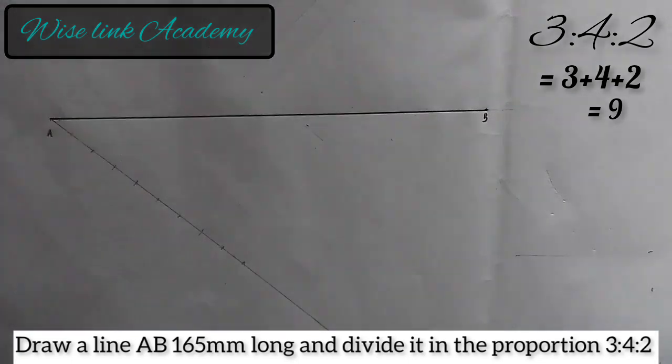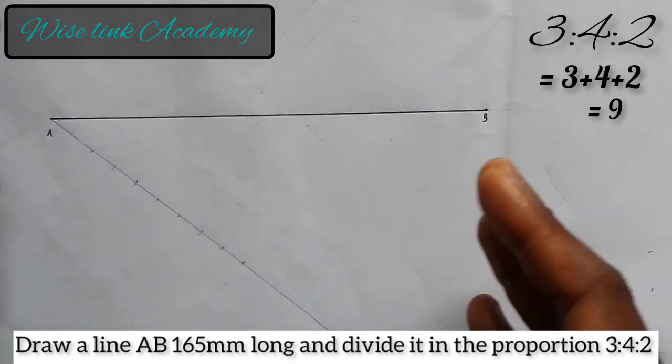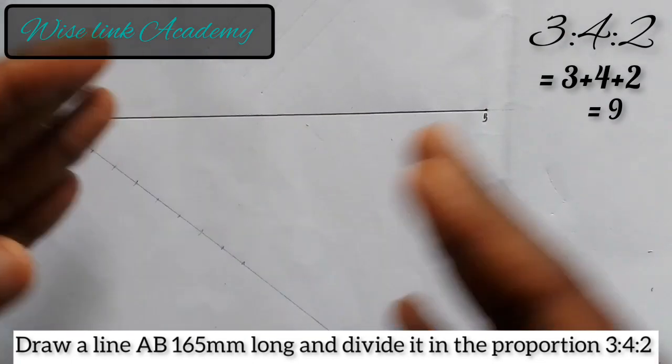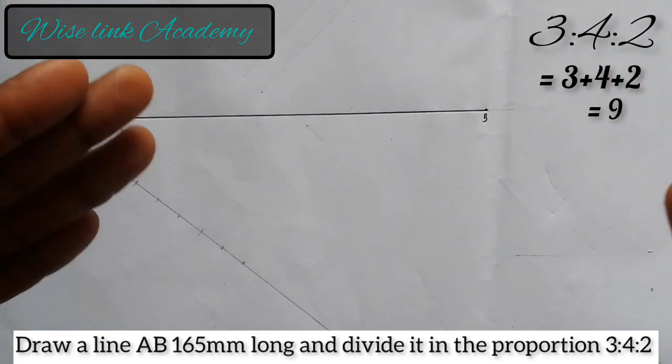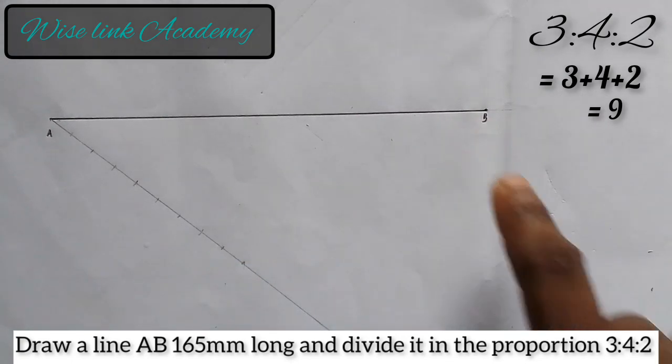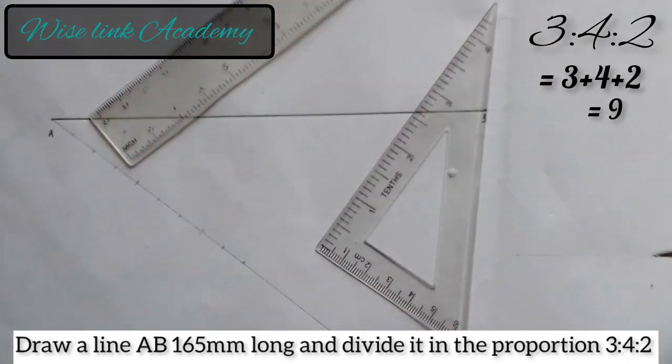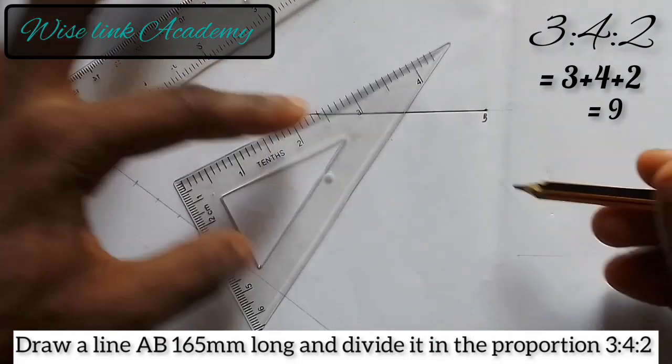So my next task now, I think you all know why I divide it into 9. I added up the ratios. 3 plus 4 plus 2, I have 9. So my next task now is to join this 9th point to this with the front line. I'll do it with my ruler. I have my set square.